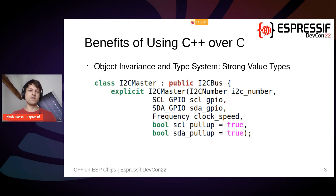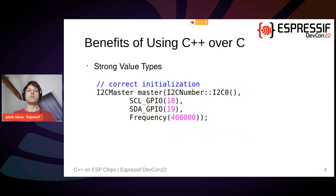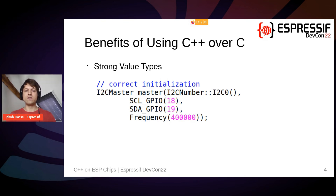Let's take a look at this class I2CMaster. It has a constructor and the first four arguments have a strong value type. So if you want to use that constructor, you have to pass the actual type. You cannot, for example, pass an int 18 — just a raw int. You have to explicitly first create the type SCLGpio and then you can use it. Otherwise you'll get a compile error.